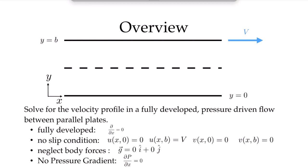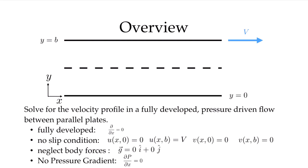We're going to change our coordinate system a little bit compared to the last example. We're going to move our origin down to the bottom wall. We still have an xy coordinate system, and it's still going to be a two-dimensional problem. We have solid walls at y equals zero and at y equals b. In this case, there is no pressure gradient — the pressure is constant everywhere in this flow. We're driving the flow by applying a velocity on the top wall, which is moving with velocity V. We want to solve for the fully developed flow — not pressure driven, but driven by a force applied to the top plate, which results in a velocity on that top plate.